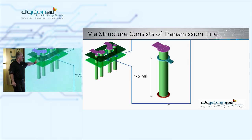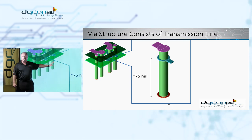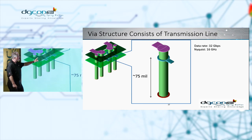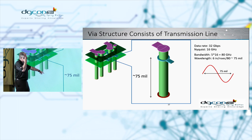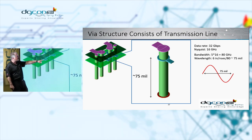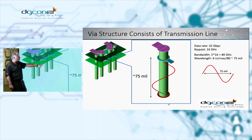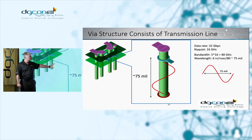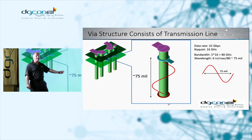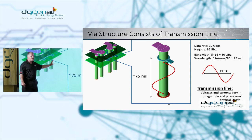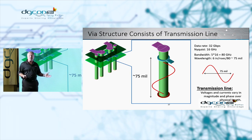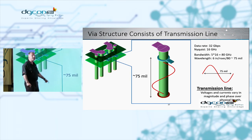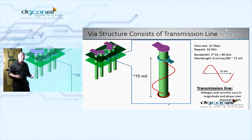Let's talk about vias. Differential via structures have a stub length — in this design case study we use a nice round number, 75 mils. At 80 GHz bandwidth, a wavelength is about six inches per nanosecond, which works out to about 75 mils. So one wavelength fits into this stub. By definition, this is a microwave transmission line — we can no longer treat it as a lumped element. We must treat it as a distributed element, because voltages and currents vary in magnitude and phase over this physical length.